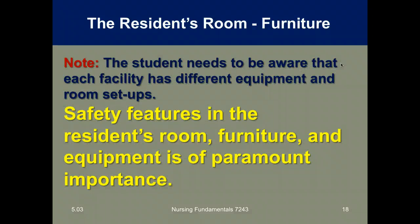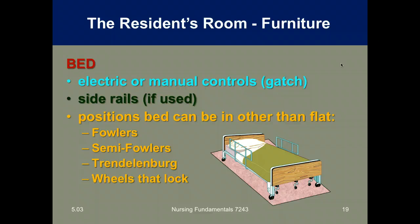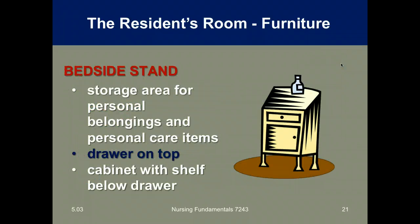Each facility has different equipment and room setups. Safety features in the resident's room are of paramount importance. Beds can be electric or manually controlled and may have side rails — all side rails should function properly. Bed positions other than flat include semi-Fowler's, Fowler's, and Trendelenburg, and all wheels should lock. The over-bed table adjusts to various heights and is used for eating, writing, and other activities, and often contains storage for the resident's grooming articles. It can also be used by the nursing team as a workspace.